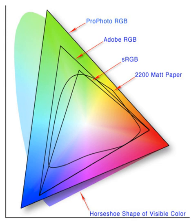Another way of creating colors on a monitor is with an HSL or HSV color space, based on hue, saturation, and brightness. With such a space, the variables are assigned to cylindrical coordinates.